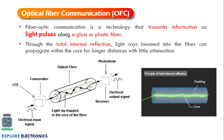Optical fiber communication is also called as fiber optic communication. This technology uses light pulses to transmit information, and we are going to make that light travel through a plastic fiber or glass. As you can see in the diagram, this is an optical fiber. In this optical fiber we will be having two layers — the outermost layer will be cladding, and inside that we will have one more layer called core.